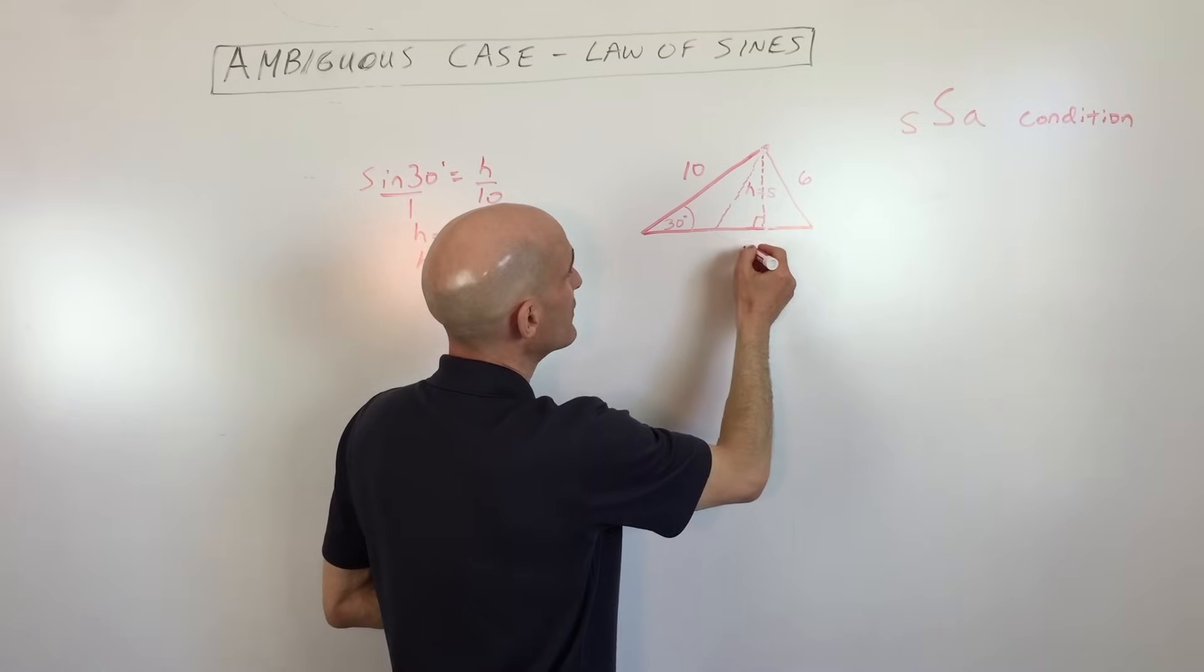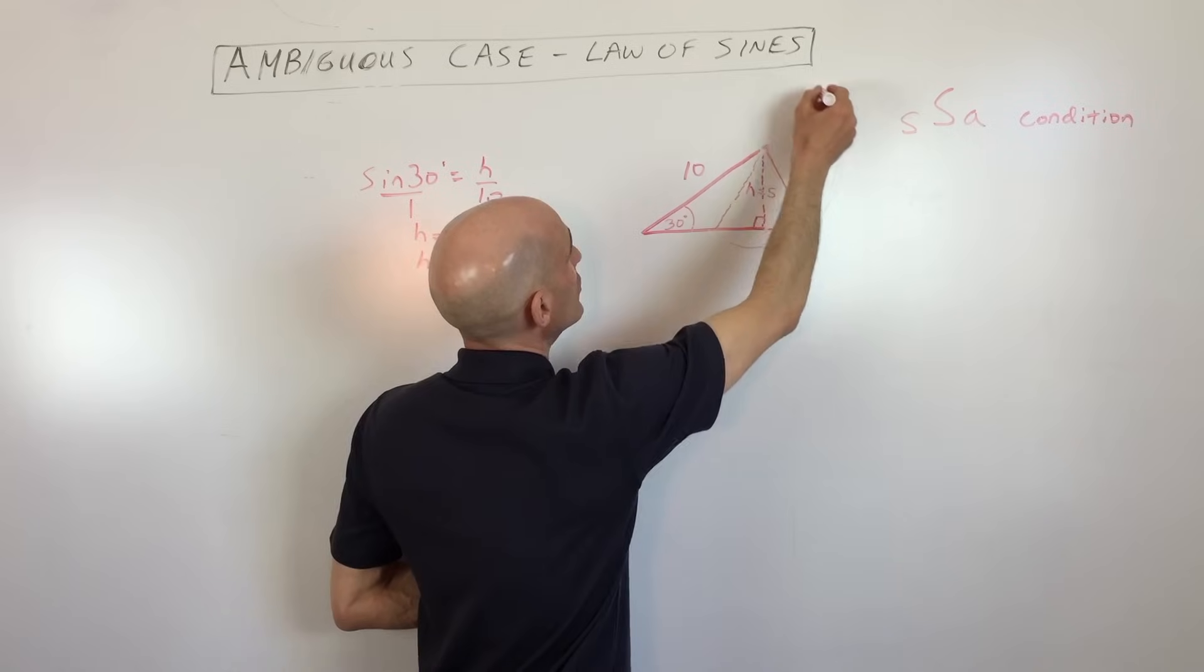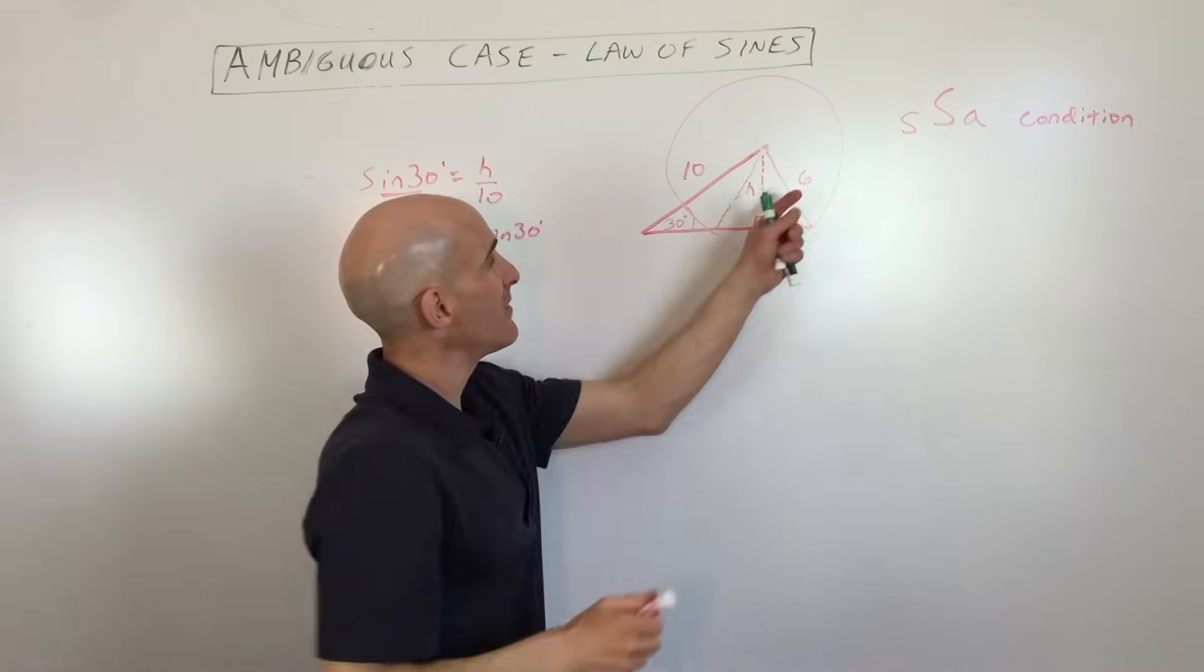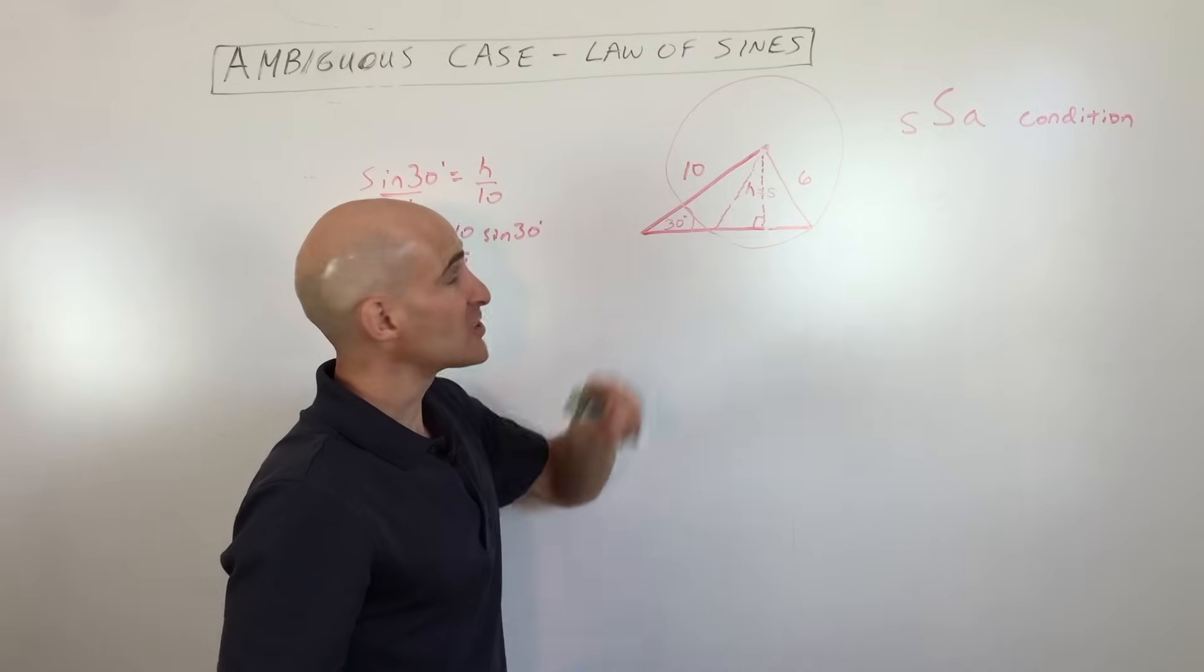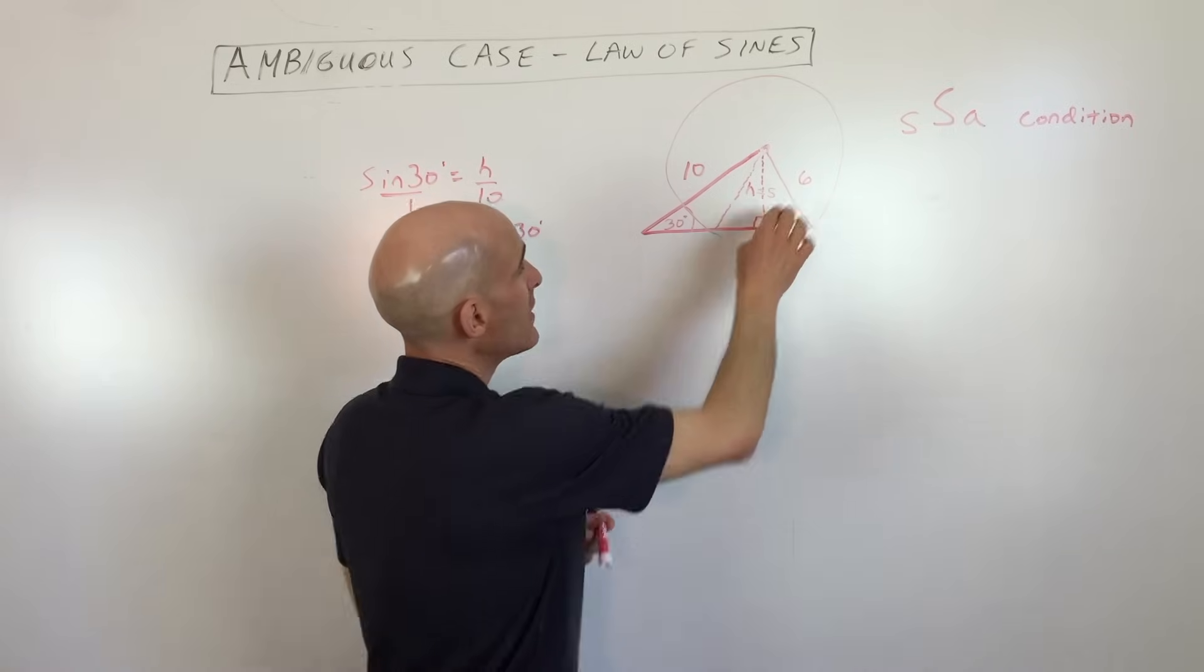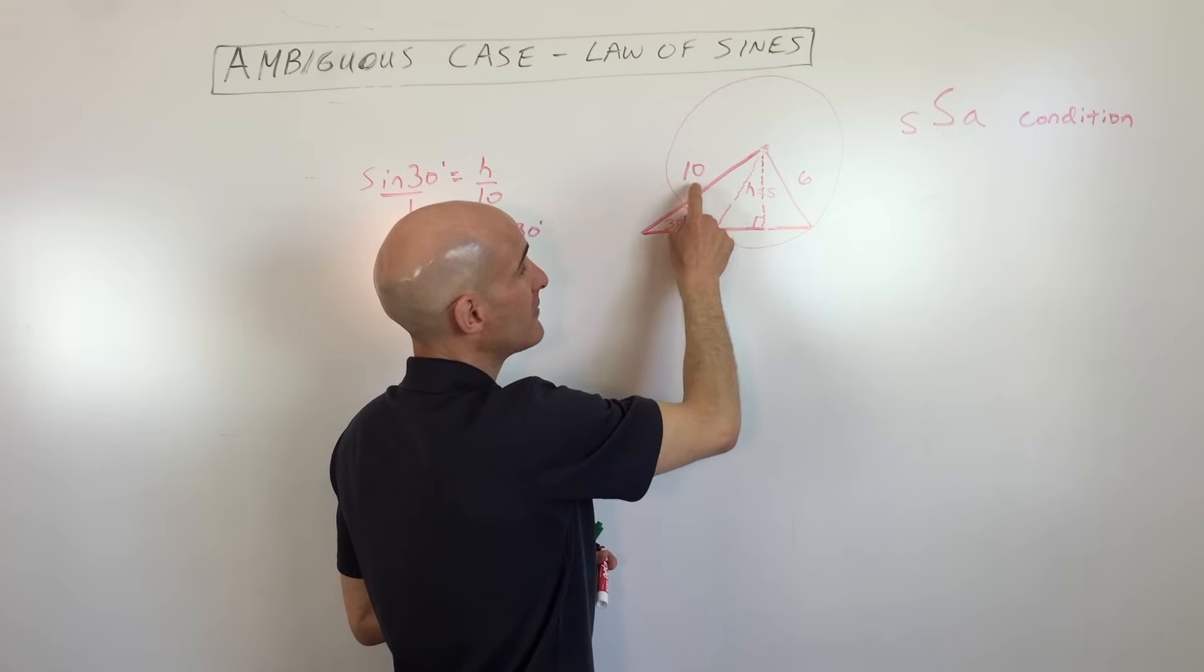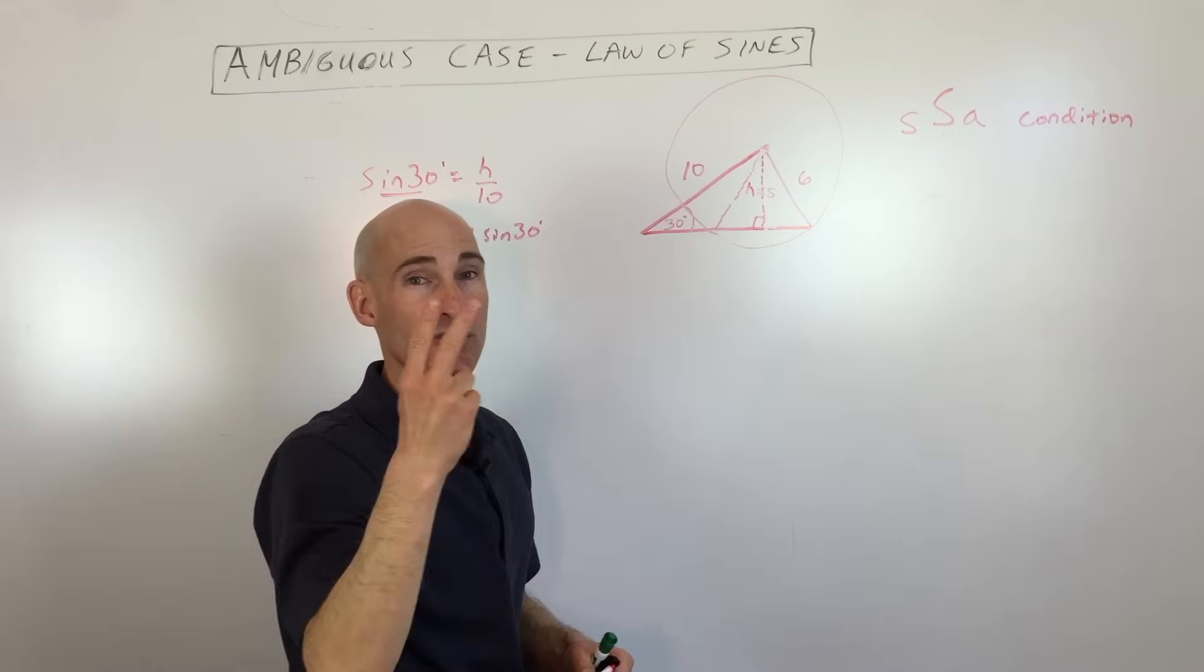So basically, it's like if you think of this as on a circle like this, all we're doing is we're just rotating that side. So there's actually two triangles possible. So when this side opposite the acute angle is in between the altitude five and the side adjacent ten, that tells you that there's two triangles.